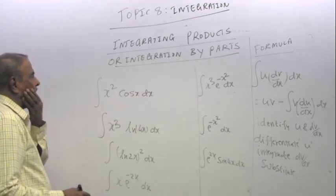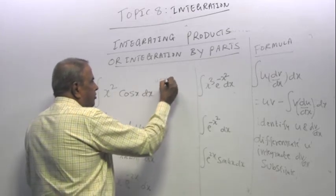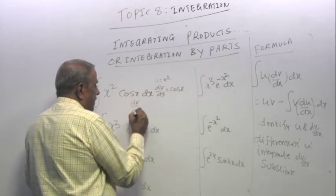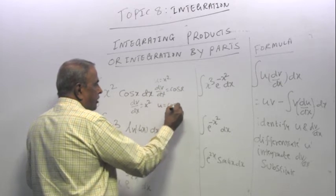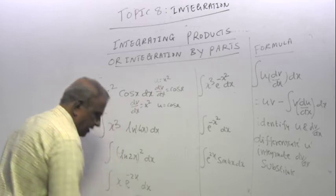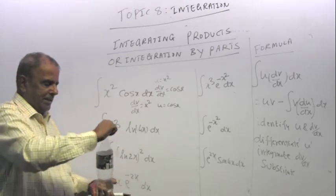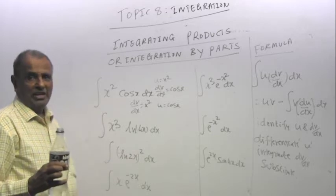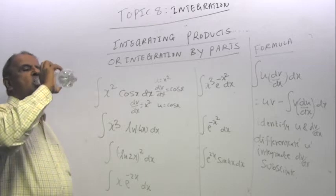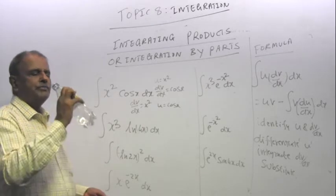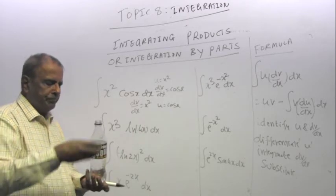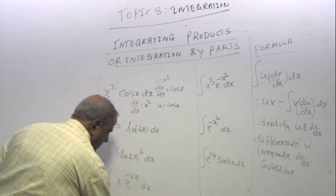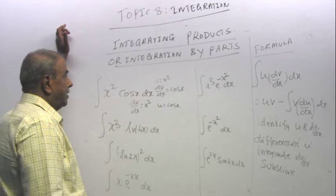Now I need to identify u and dv/dx. Say I could call u equal to x squared, dv/dx equal to cos x. But nothing prevents you from calling dv/dx as x squared and u as cos x, because you can differentiate both, you can integrate both. Let me have a sip of water. Today something funny happened. I was bringing the water bottle from home, from the fridge. I thought I picked water, plain water. I ended up getting fizzy water.